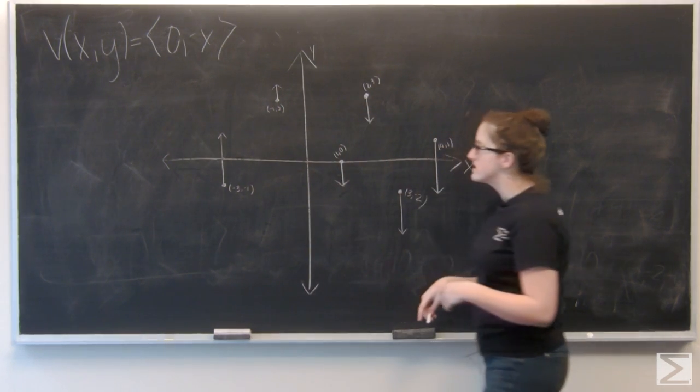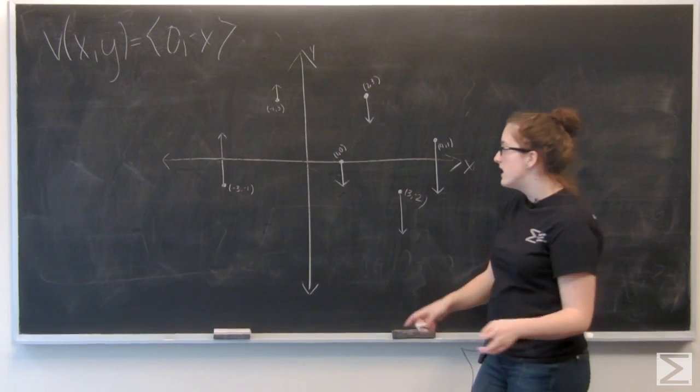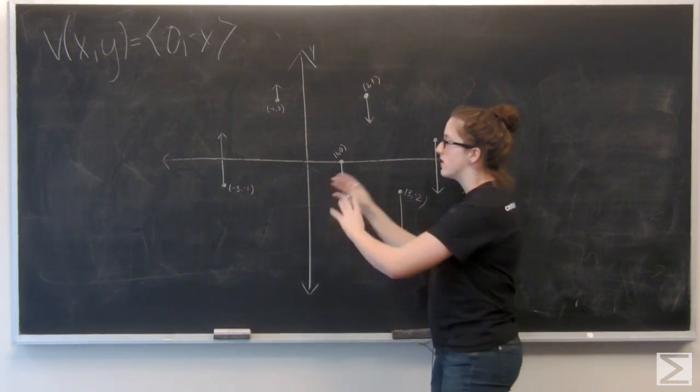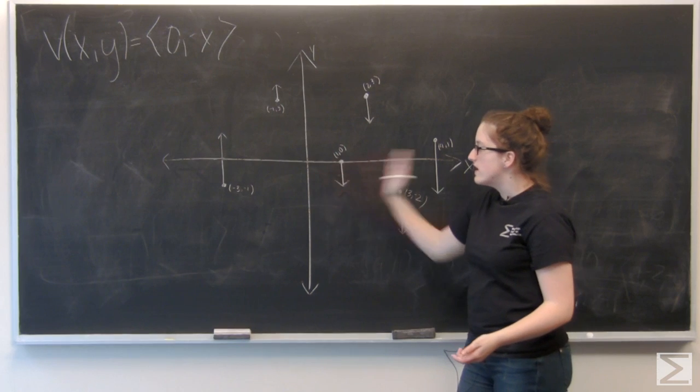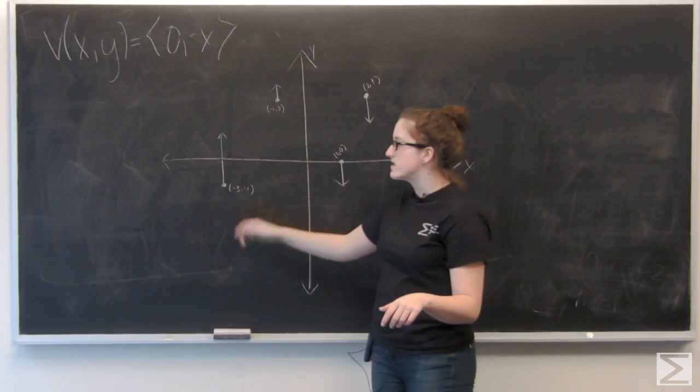So, in general, we can see that the vector field is only dependent on the x coordinate, and the closer we get to the origin, the shorter the vectors are. The farther away we get, the longer their magnitude, and then for positive x values, all the vectors are going to point downward, and then for negative x values, all the vectors point up.